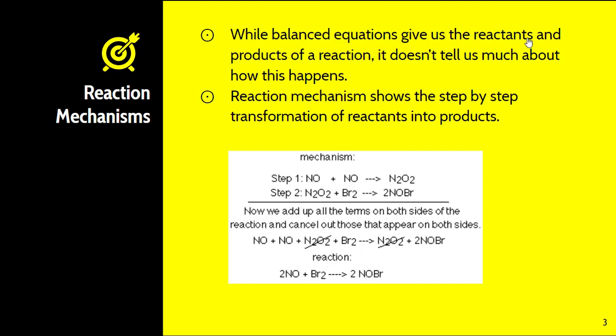The reaction itself is two nitrogen monoxide molecules reacting with bromine to form NOBr. The first step is that the two NO molecules combine to form N2O2, which then reacts with bromine to produce NOBr. The product of the first step becomes a reactant in the second step. We don't show intermediates in the full reaction because they occur so quickly and are used up just as fast.